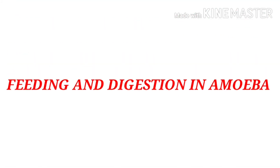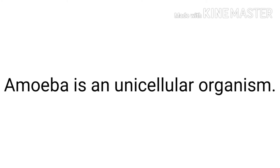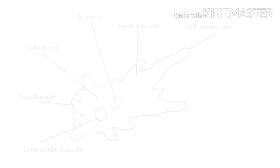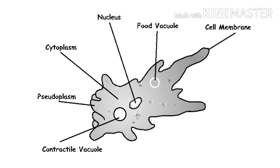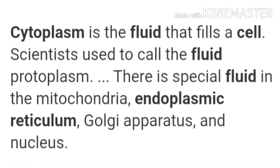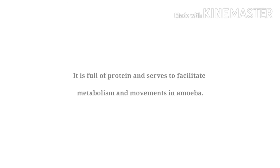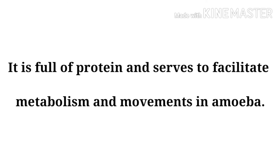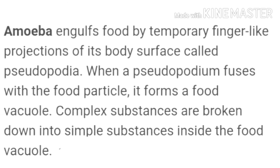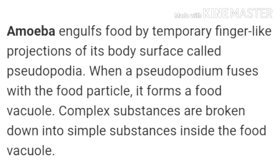Now let's start the last topic of this chapter: feeding and digestion in amoeba. Amoeba is a unicellular organism, meaning a single-celled organism, found in pond water. Amoeba has a cell membrane, a rounded dense nucleus, and many small vacuoles in its cytoplasm. The fluid present in the cell excluding the nucleoplasm is called cytoplasm, which is full of protein that controls cell metabolism.